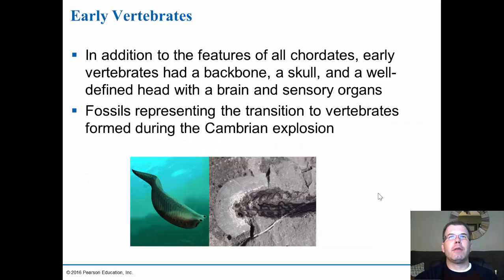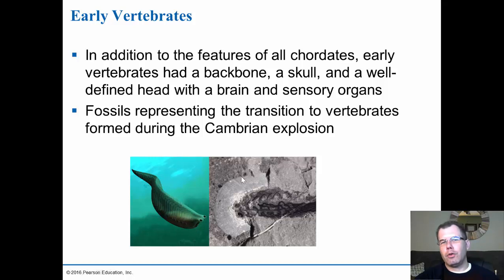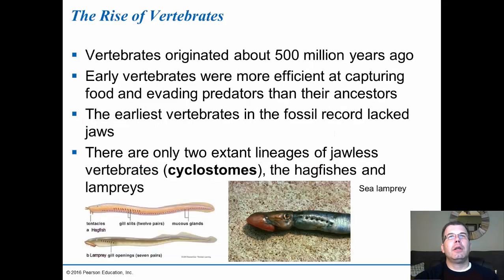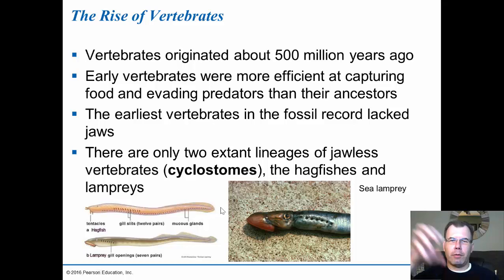The early vertebrates have features including a backbone, a skull, and a well-defined head with brain and sensory organs — that's the whole bilateral cephalization, with sensory organs in the front along with the brain. This transition probably happened during the Cambrian explosion about 500 million years ago. The early vertebrates were more efficient at capturing food and evading predators because of the way they moved and the protection from the development of vertebrae protecting the dorsal nerve cord.